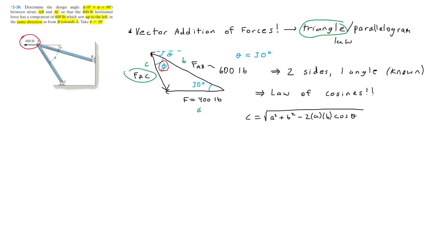Now substituting these into the law of cosines, we have FAC equals the square root of 400 squared plus 600 squared minus two times 400 times 600 times cosine 30. We can plug this into a calculator and solve for the value of FAC. This is equal to about 322.97 pounds.